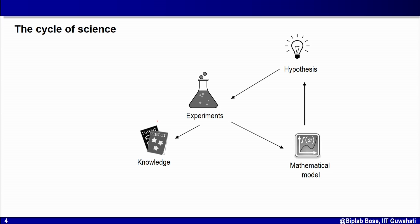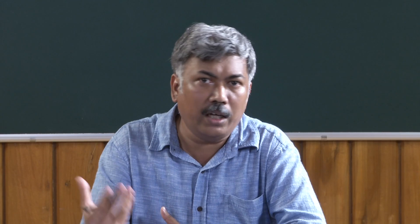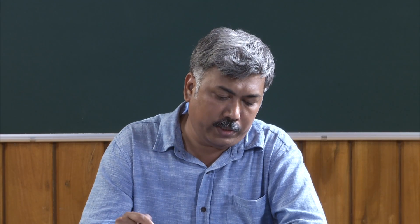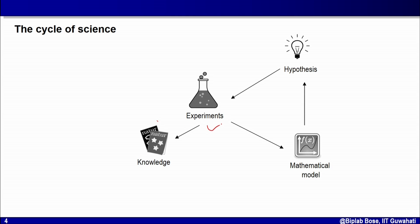Mathematical models fit right into this cycle. In some cases, experimental observation may not be good enough to understand the phenomena, or the data may be so huge that you cannot intuitively understand its implications. Based on the observation and the physical principles involved, you create a mathematical model. That model helps you make new hypotheses, and from those hypotheses you go back to experiments. In this way, through the cycle of experiment, mathematical model, and hypothesis building, we develop new knowledge.